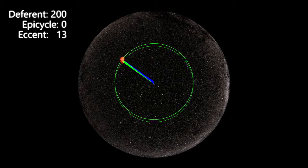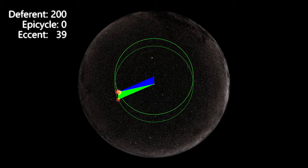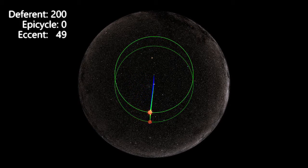Thus, the ancient astronomers conceived the notion of an eccentric circle, whereby the planets travel according to regular, circular motion around a centre that is offset from the Earth.